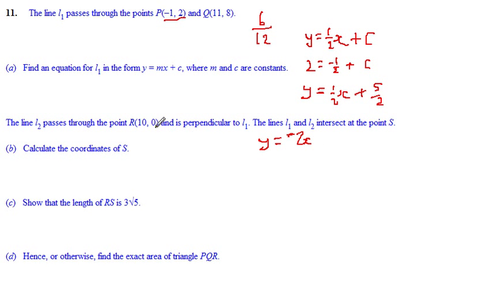Now, to find c, put the numbers in: 0 equals minus 2 times 10, which is minus 20, plus c, so I need to add 20.